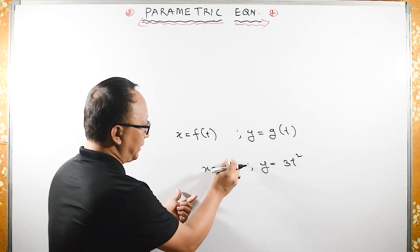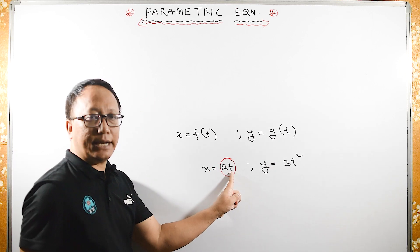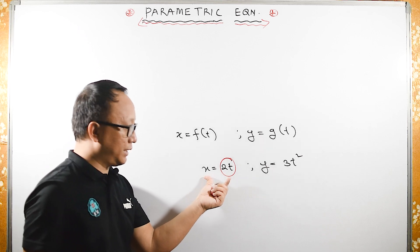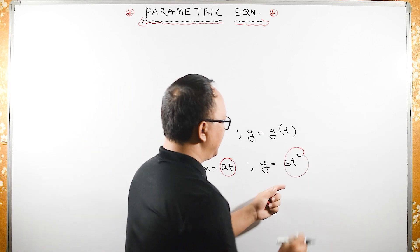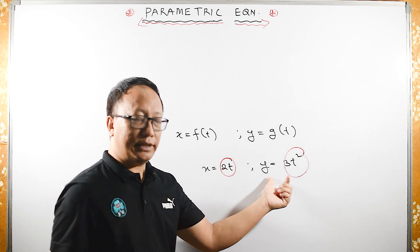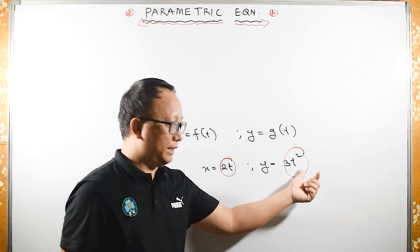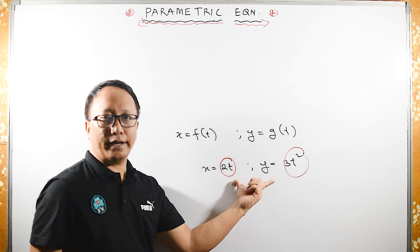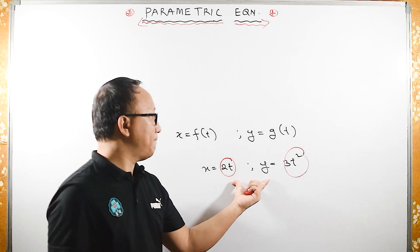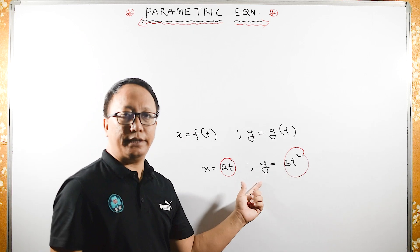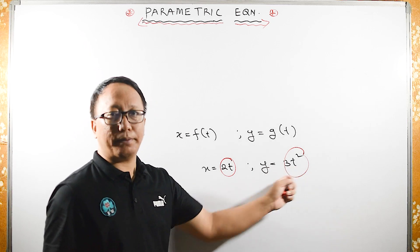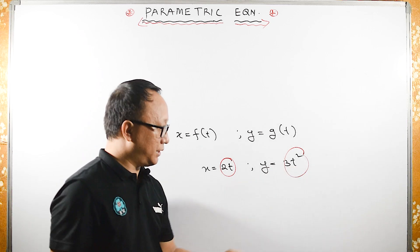This x is totally dependent upon t — whatever value you assign to t, x has to change. Similarly, this y value is totally dependent upon the variable t. Therefore, both x and y depend upon this new variable t. That new variable t is called the parameter, and this is called a parametric equation.